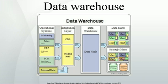Unlike the ETL-based data warehouse, the integrated source data systems and the data warehouse are all integrated since there is no transformation of dimensional or reference data. This integrated data warehouse architecture supports the drill down from the aggregate data of the data warehouse to the transactional data of the integrated source data systems. A data mart is a small data warehouse focused on a specific area of interest. Data warehouses can be subdivided into data marts for improved performance and ease of use within that area. Alternatively, an organization can create one or more data marts as first steps towards a larger and more complex enterprise data warehouse.